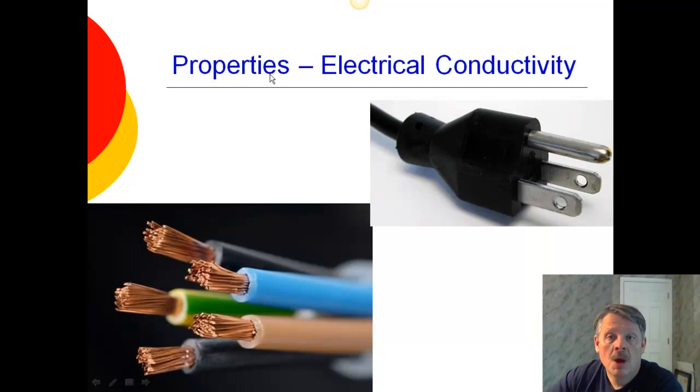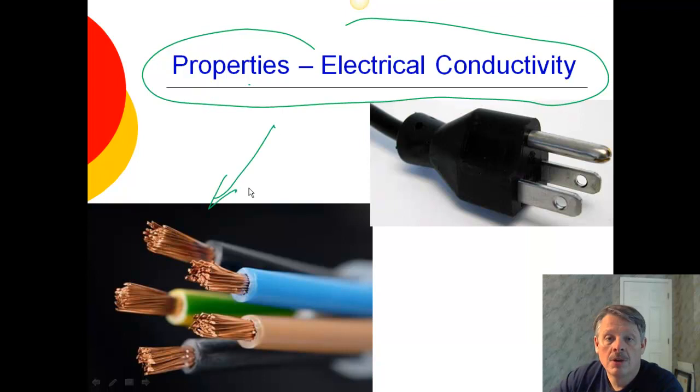Another property of metals is that they conduct electricity. So, if you look at an electric wire, for example, which is made typically out of copper or aluminum, or you look at a plug, which has a steel or a stainless steel or a zinc prong to it, these all conduct electricity.